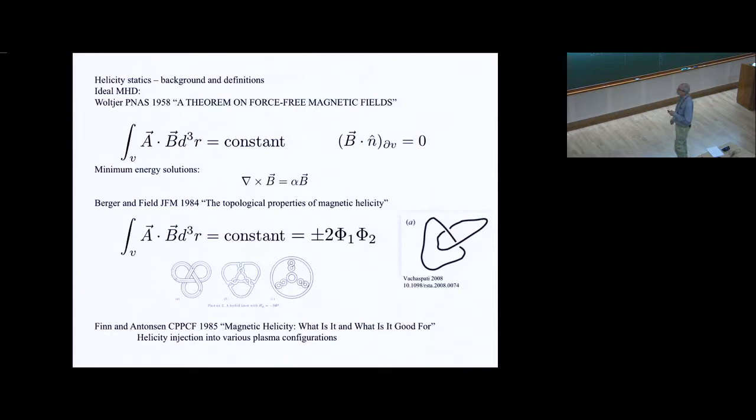Keith Moffat then wrote what is a plausibly infectious paper in 1969, The Degree of Knottedness of Tangled Vortex Lines, where he derived, based on considerations of ideal fluid flow, that the volume integral of the velocity dotted into the vorticity is a constant, again under boundary data which is more or less identical. The vorticity is not normal to the boundary, or you consider all space.